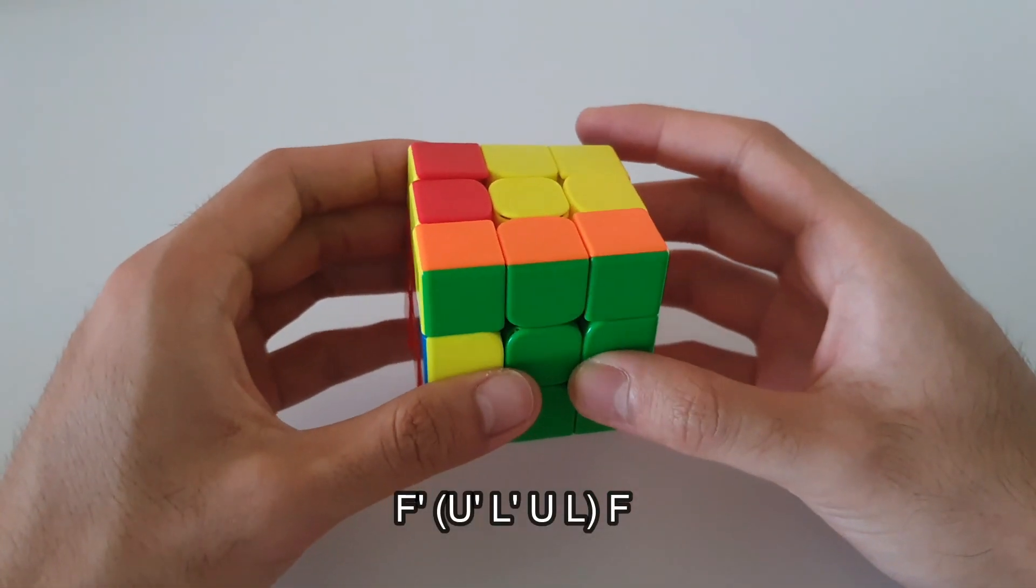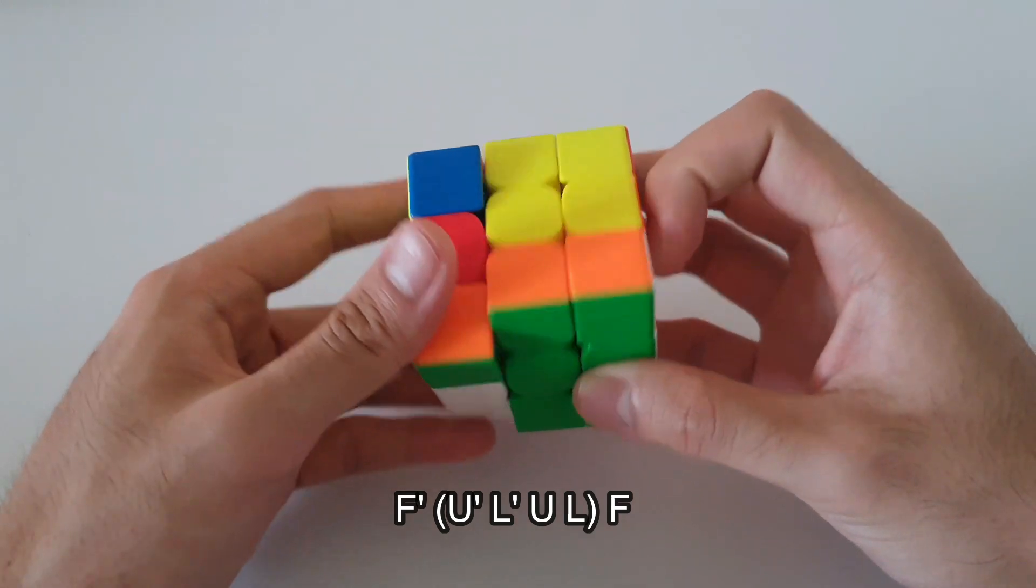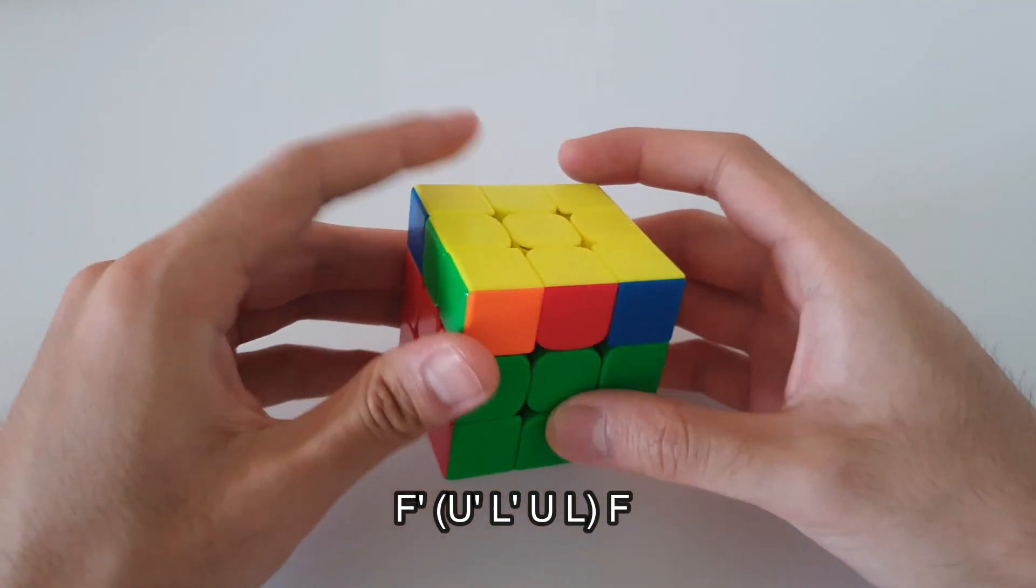and then you follow that up with an inverse sexy with your left hand, and then you finish off with an F move.